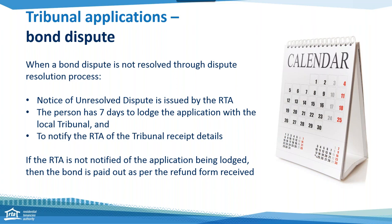For bond disputes it is important to remember this is very time sensitive. Once the notice of unresolved dispute is issued, the person has a seven-day time frame to lodge an application with the tribunal and also to notify the RTA in writing of the application receipt details. It is a two-part process. If both processes are not followed and the RTA is not notified by the applicant in time, then the bond will be paid out. Don't leave this to the last minute — get your paperwork and evidence and start preparing your application as soon as the notice is issued. For tenancy matters, the time frame to pursue through the tribunal is six months from when you're aware of the event or the breach. The RTA has a flow chart on our website about the dispute resolution process along with hints and tips.